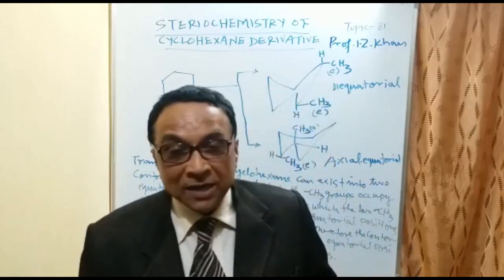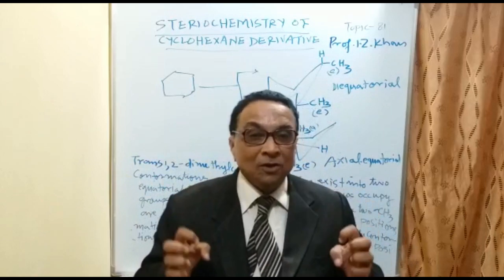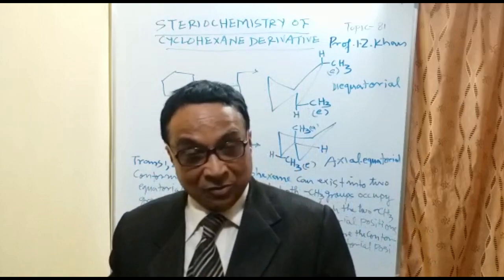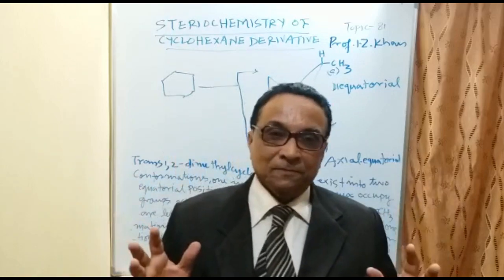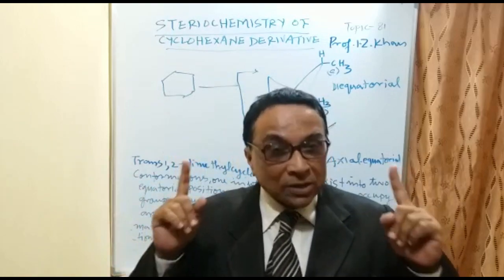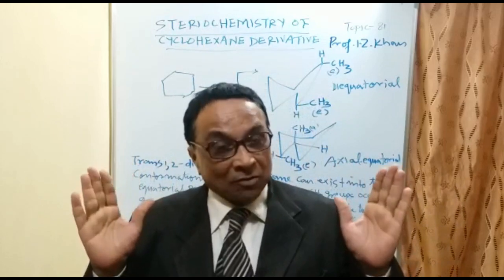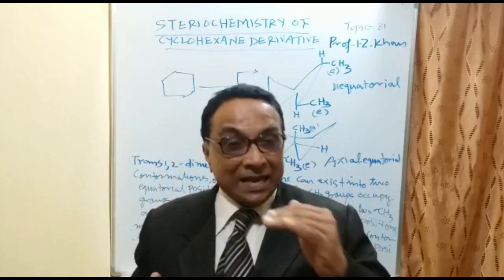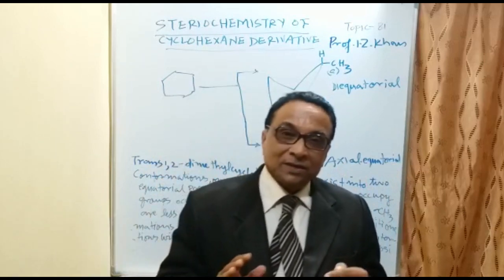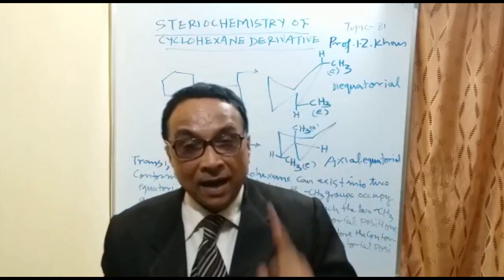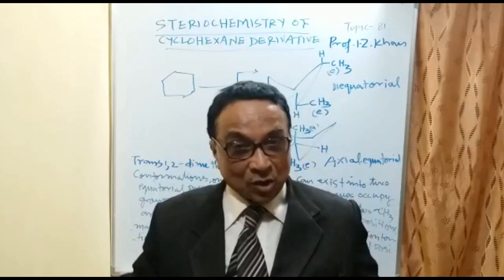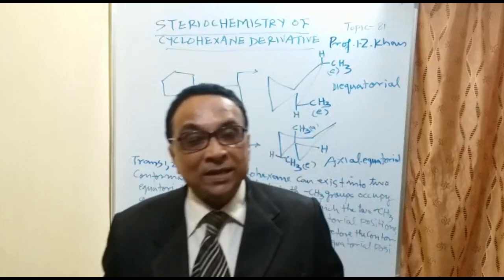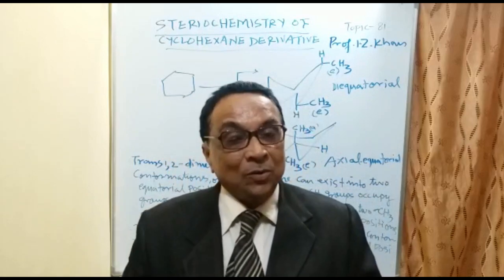It is very important to know which conformation will be more stable — substituents in axial or equatorial positions. If two methyl groups are both axial, there will be crowding, and once there is crowding it will be unstable. That is why axial substituents in cyclohexane are unstable. When they are equatorial, there is no crowding and no angle strain, so equatorial positions are always more stable.